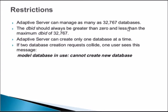Restrictions: Adaptive Server can manage as many as 32,767 databases. Before continuing, here is a question — why this number 32,767? Why not 33, why not 32? This is an interesting and important fact — who wants to answer why this odd figure of 32,767?